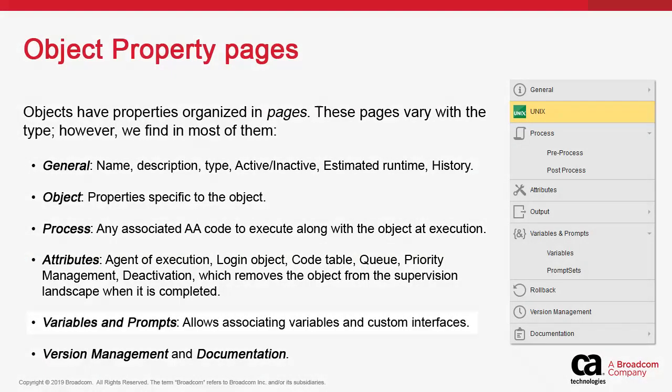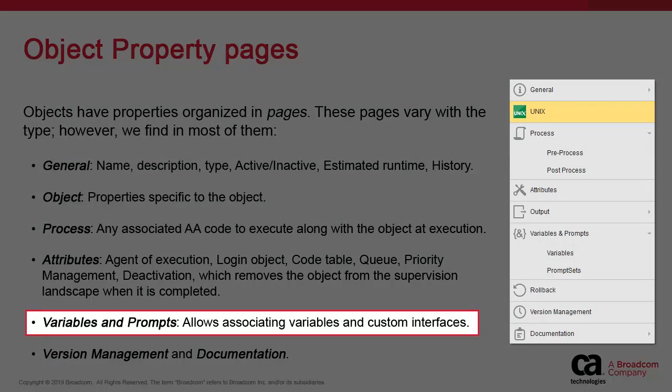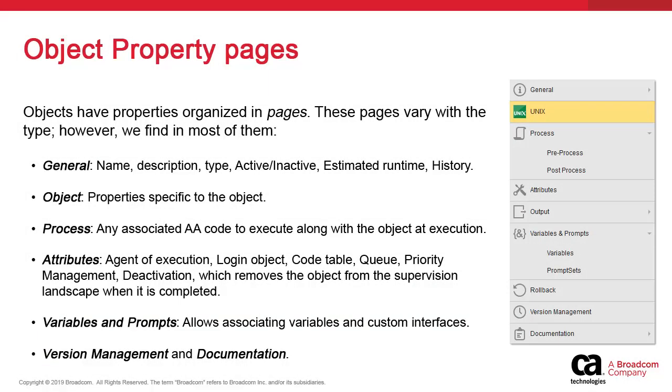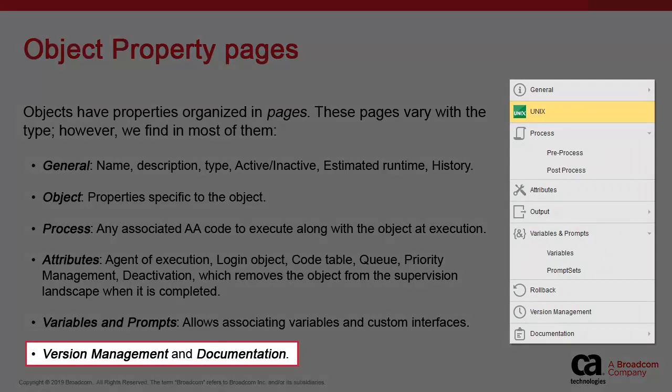Using variables and prompts, you'll be able to associate variables to the object to make it more dynamic and flexible, and create prompts to design custom user interfaces to allow interactivity. Version management contains the successive stored versions of the object as it is updated, and documentation allows users to document the work they've performed on the object.